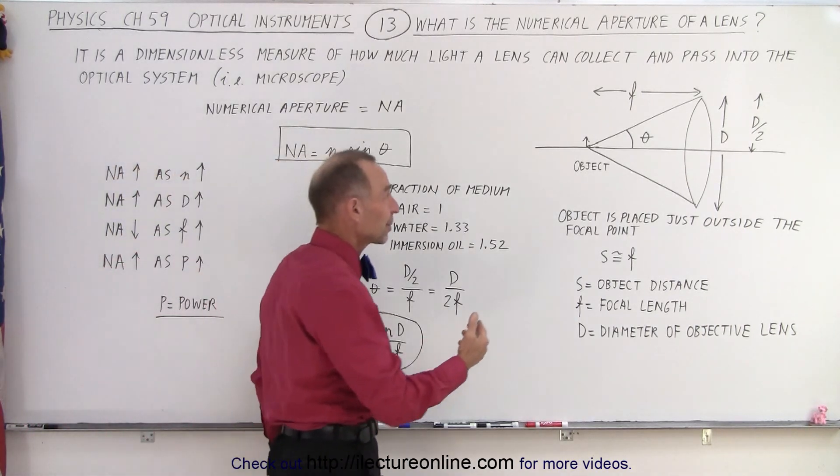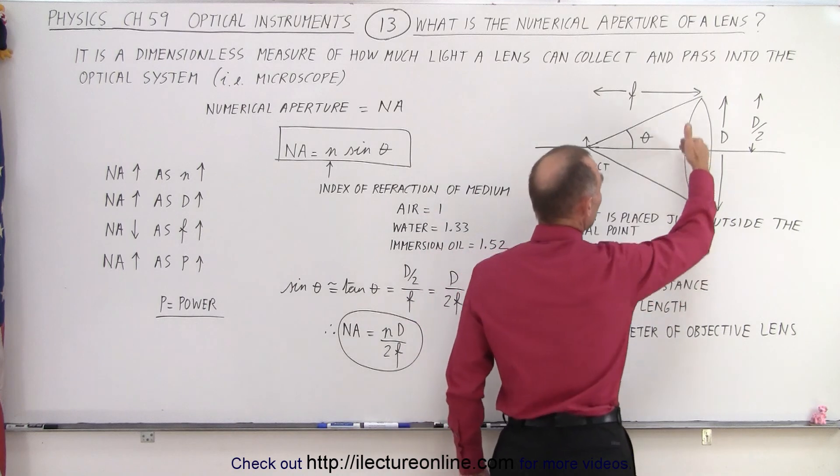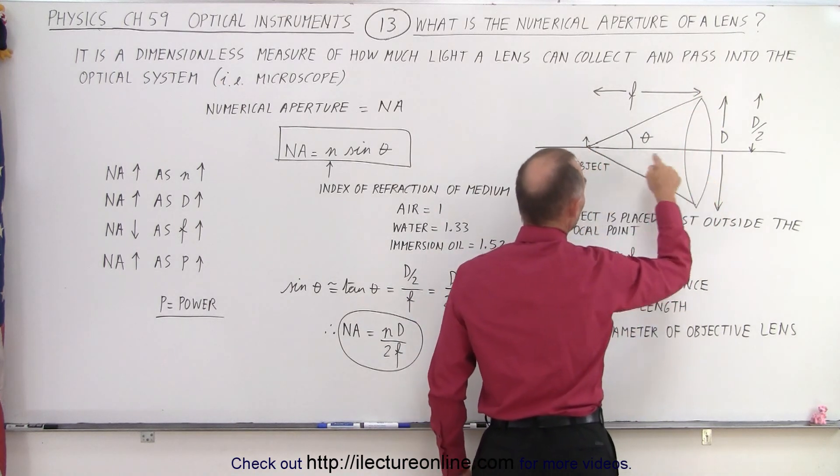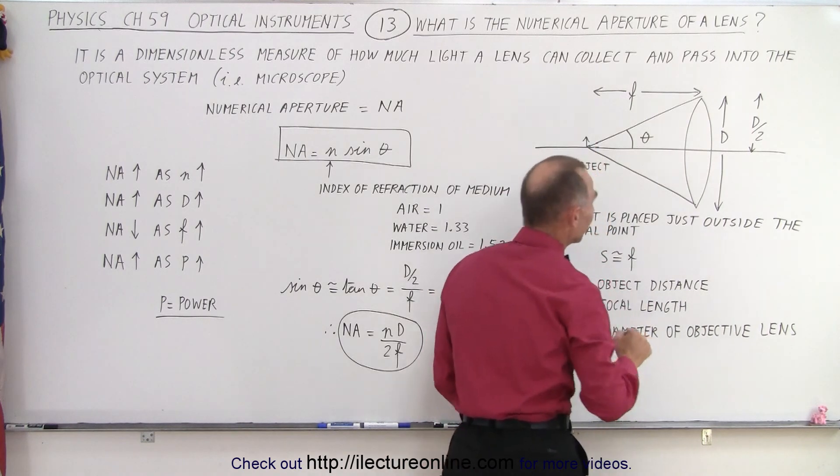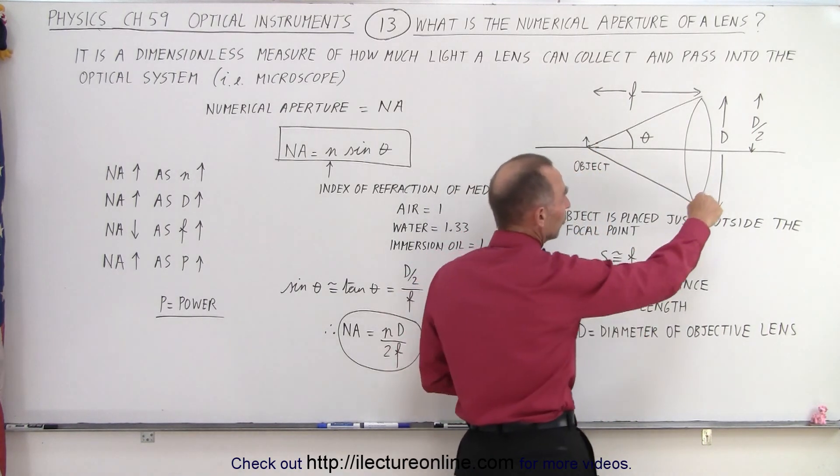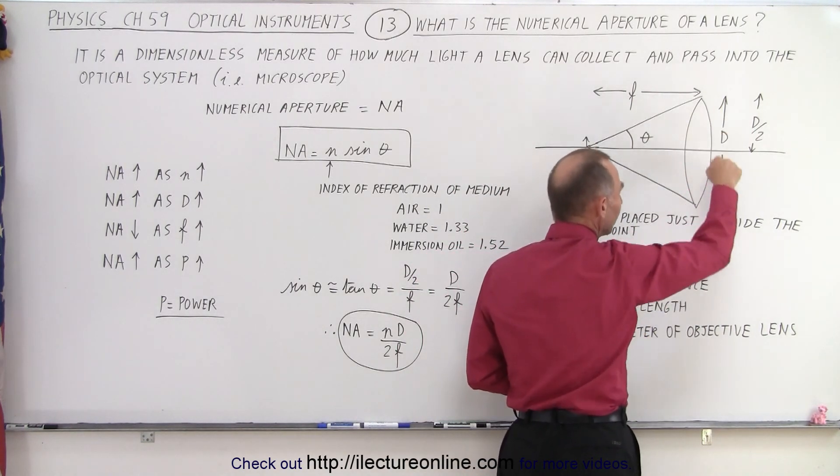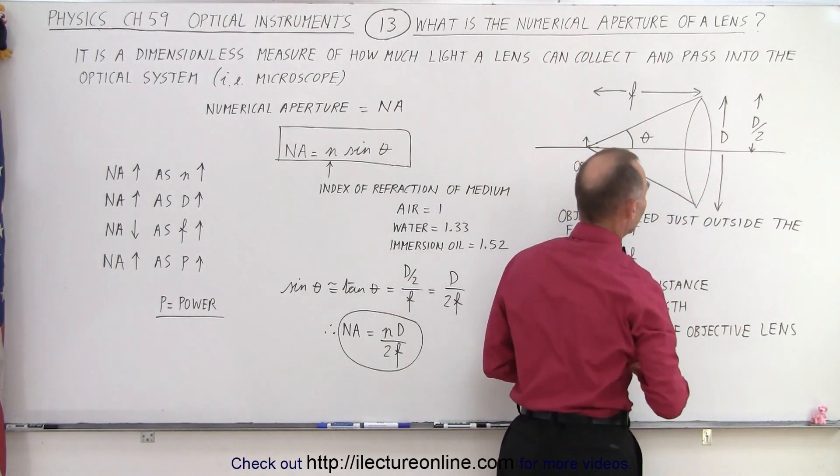Now the sine of the angle theta comes from here. Here's the diagram. Notice we have an objective lens. We have a focal point of the lens, and typically the object is placed right outside the focal point. Notice we have the diameter of the lens and we have half the diameter of the lens.